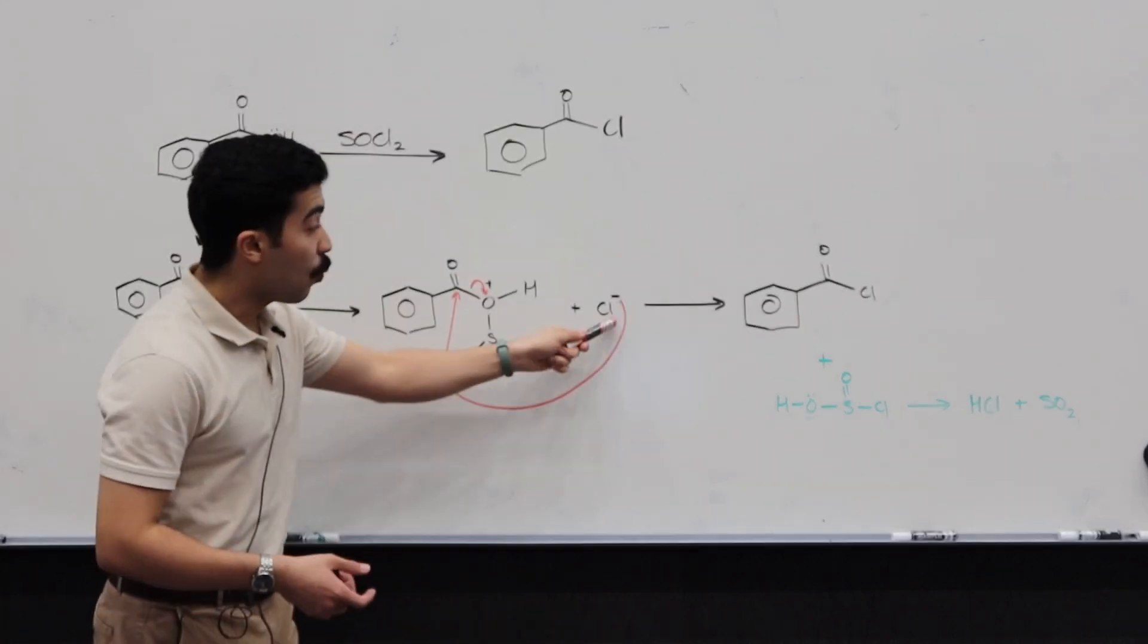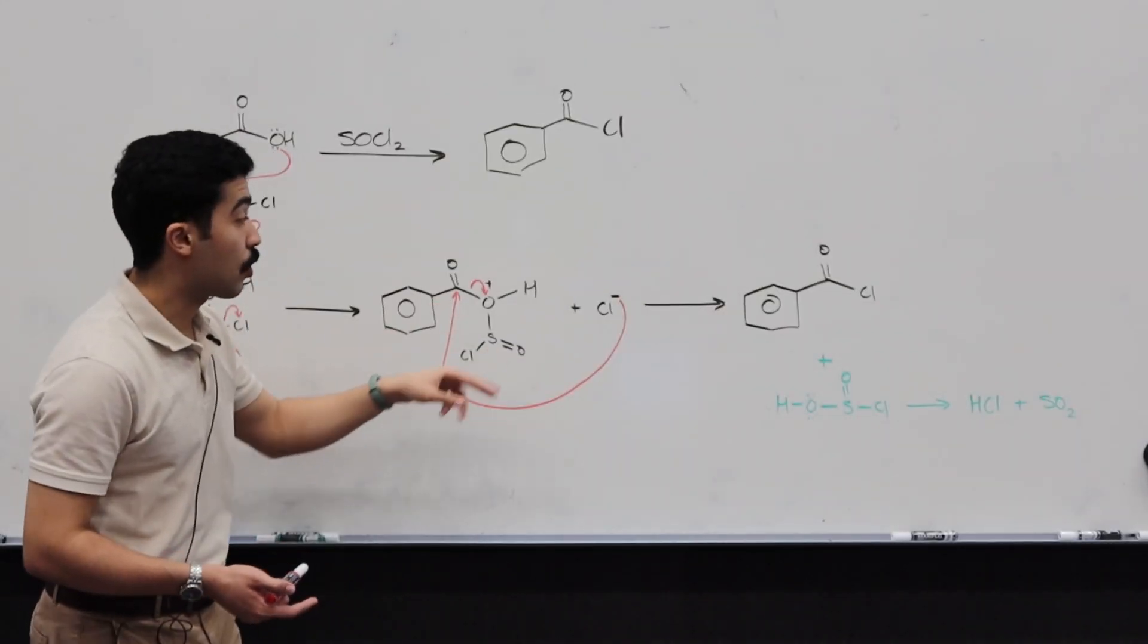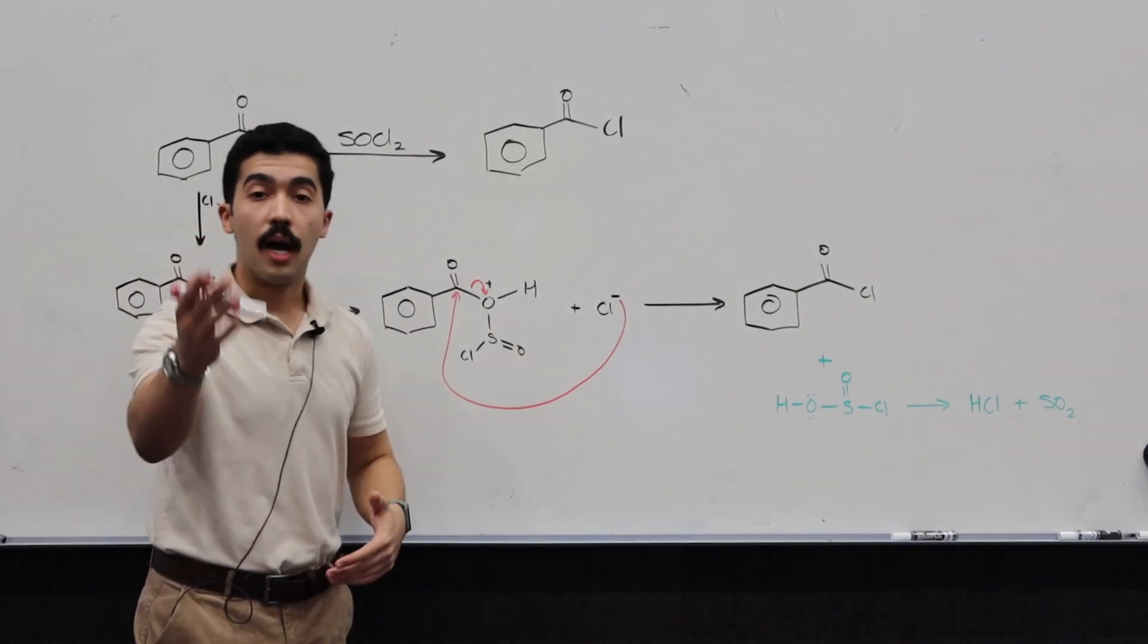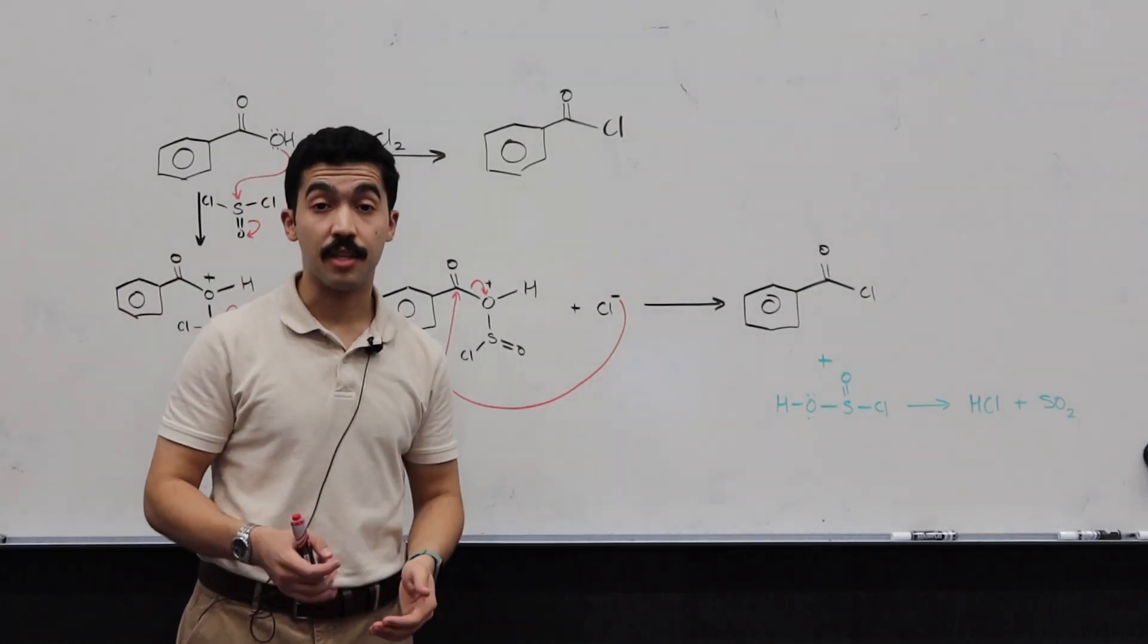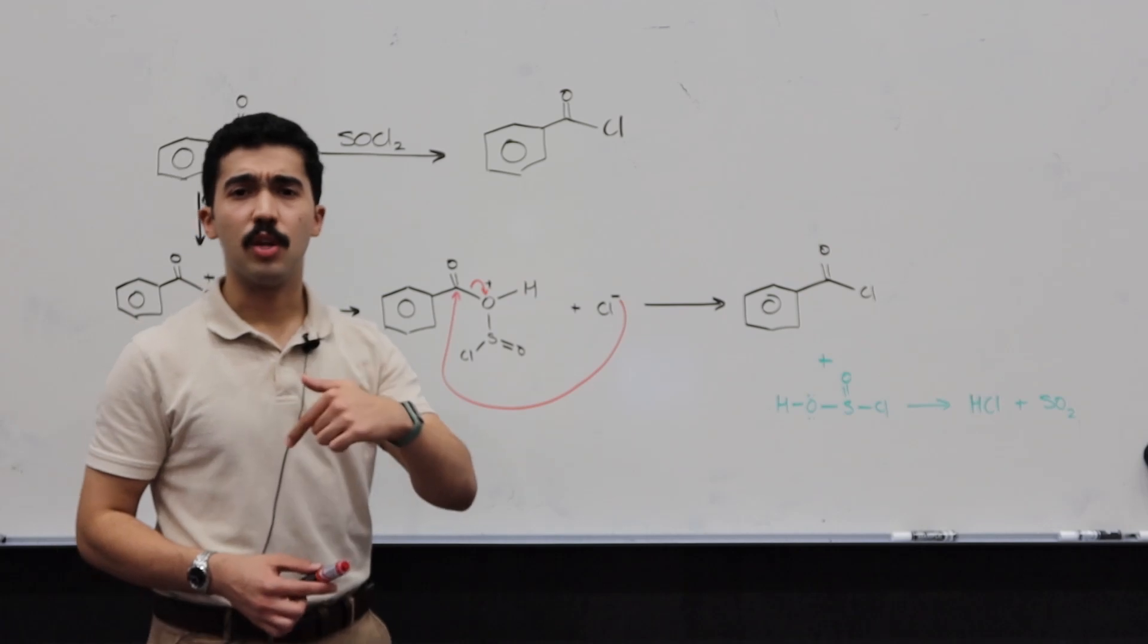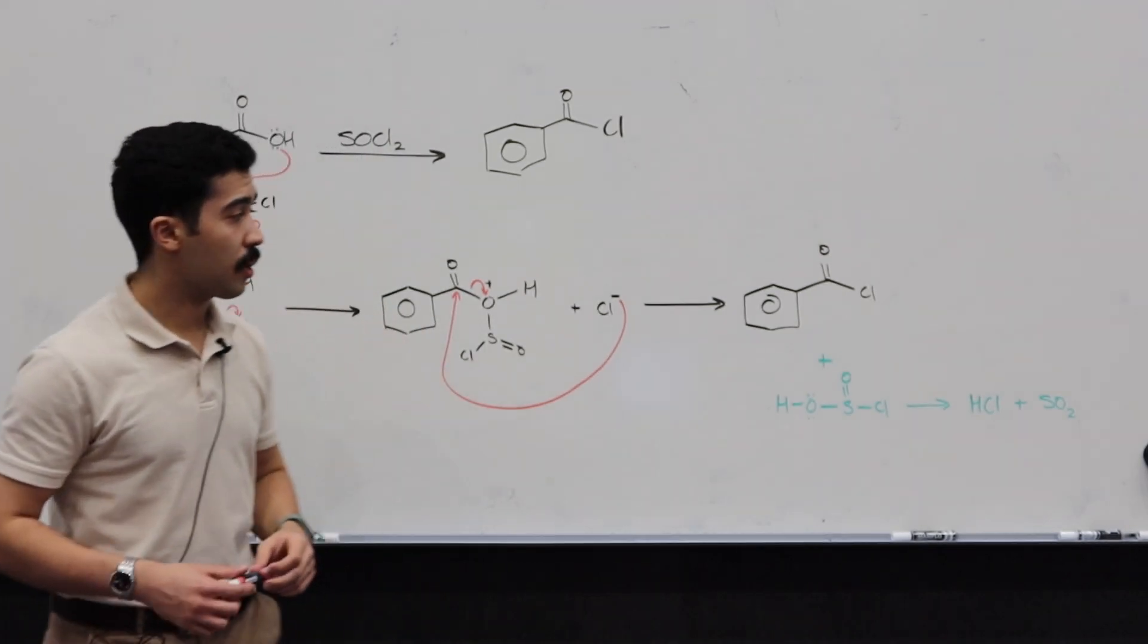If you're curious as to how and why I knew these things essentially proceeded in the way they did, why is it that the Cl here is the one that attacks this carbonyl, why does it attack this sulfur, why does it attack this hydrogen, I have a video that essentially covers the best ways to study mechanisms in organic chemistry. I think it's the video before this video. So take a look.